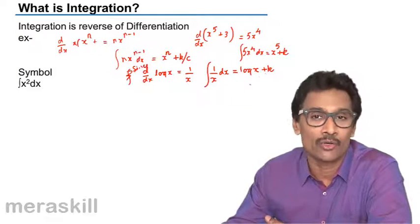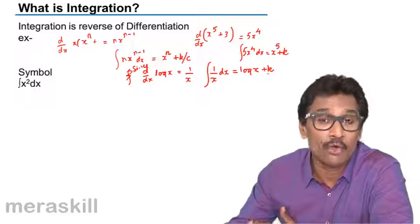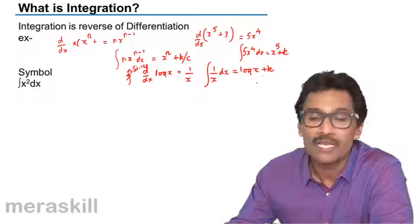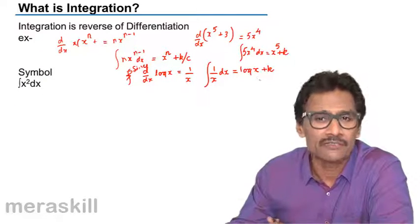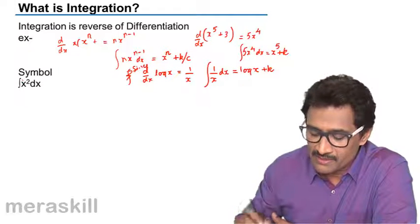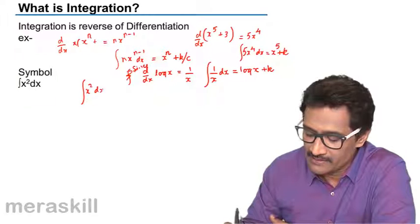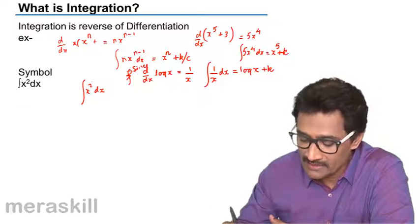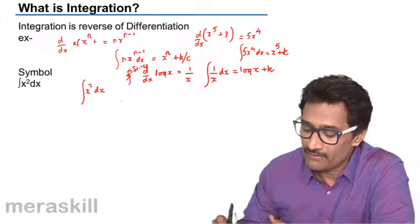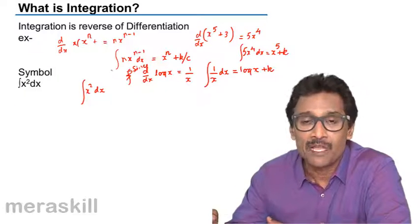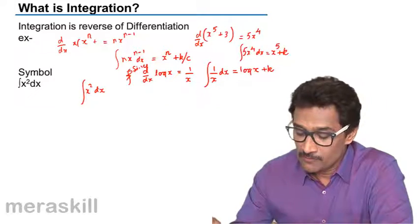So whenever we integrate something, we need to add k. It's possible that k could be 0, but there is a constant you always have to account for. Now these things could get modified in case of definite integration. The general symbol is, as I told earlier, integral of x squared dx. Hence we have this particular concept of integration. We will take up more examples. So let's move further.